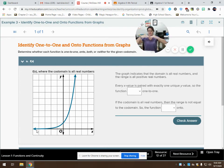It doesn't look like this is going to go below zero. It's going to get really, really close to zero, but it doesn't look like it's going to go below zero. So the graph indicates the domain is all real numbers, and the range is all positive real numbers. My y values is everything above zero. So, every x value is paired with exactly one unique y value.